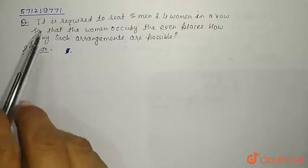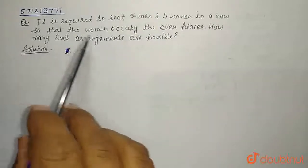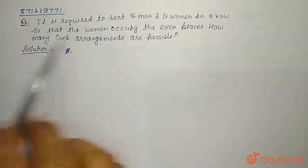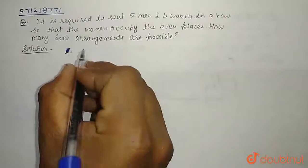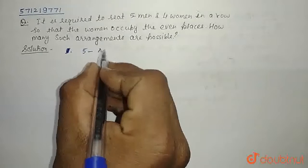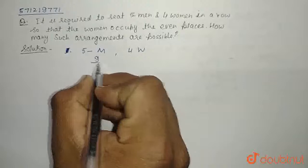The question is, it is required to seat 5 men and 4 women in a row so that the women occupy the even places. How many such arrangements are possible? So we have total 5 men and 4 women. That is, we have total 9 persons.